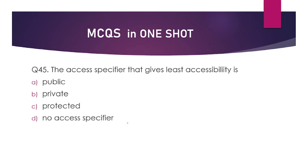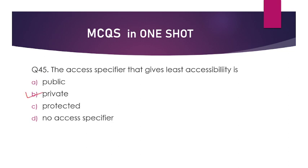The access specifier that gives the least accessibility is public, private, protected, or no access specifier? The answer is option number B — private. And when talking about most accessibility, public is the answer.